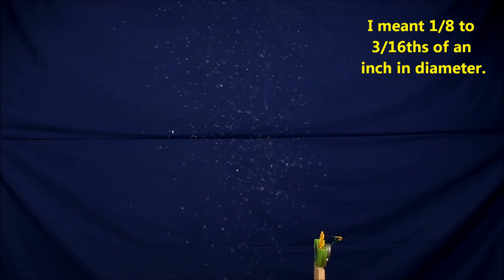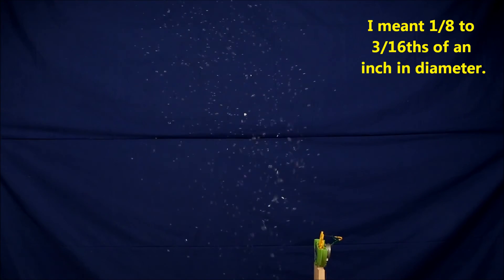And here it is in operation. The smallest bubbles are 1/16th of an inch in diameter. The average is about 1/8 of an inch to 3/16 of an inch. The very largest are no larger than a 1/4 of an inch across.